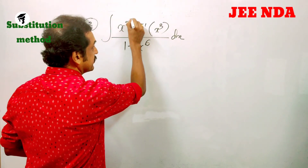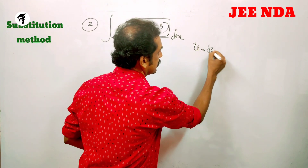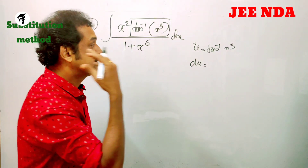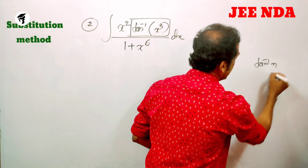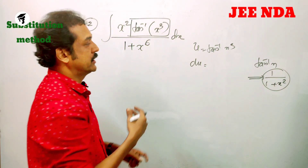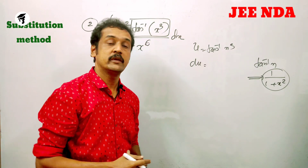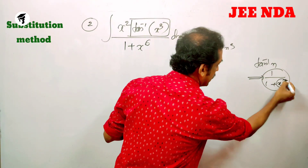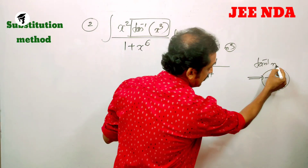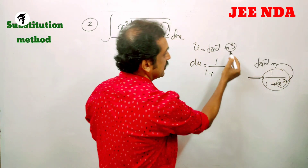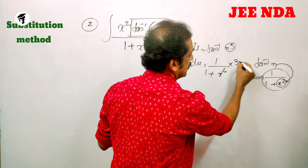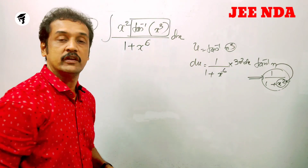If we let u = tan⁻¹(x³), then du can be written using the derivative of tan⁻¹(x), which is 1/(1+x²). The derivative of tan⁻¹(x³) — where x is replaced by x³ — gives 1/(1+x⁶) multiplied by the chain rule factor 3x² dx.